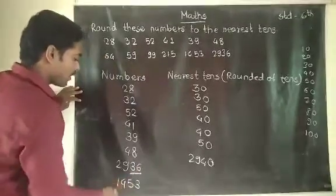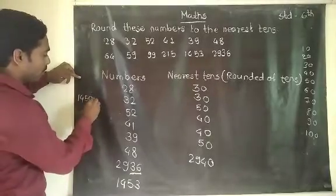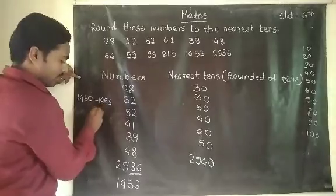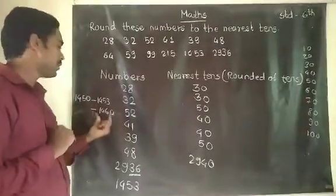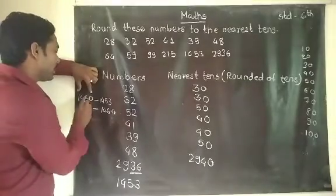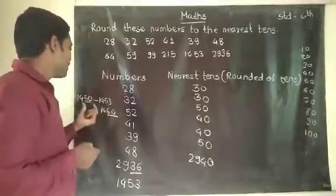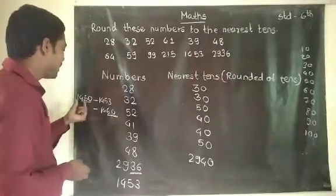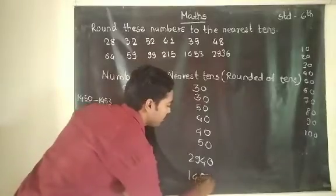For 1453: we take the last two digits, which is 53. Fifty-three is between 1450 and 1460. Which is the nearest tens? Fifty is close to 53, so the nearest tens number is 1450.